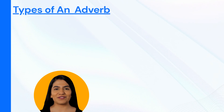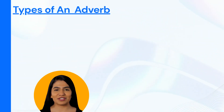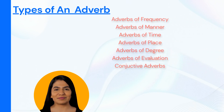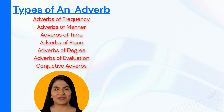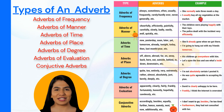Types of adverbs. There are several types of adverbs in English grammar. Here are some of the most common types: adverbs of frequency, adverbs of manner, adverbs of time, adverbs of place, adverbs of degree, adverbs of evaluation, and conjunctive adverbs.